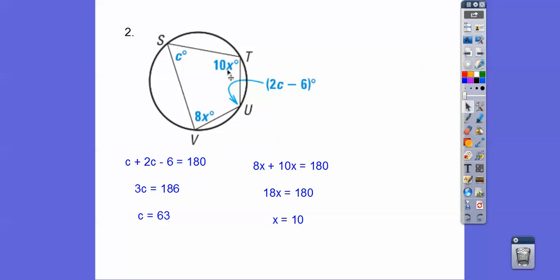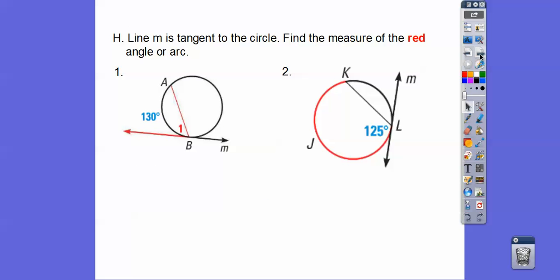Now, what if I asked you, now find angle U. So, we'd plug in C equals 63 right there. So, 2 times 63 minus 6. Or, if we said find angle T, we'd plug in X equals 10 right there. So, we might extend it a little bit on that.